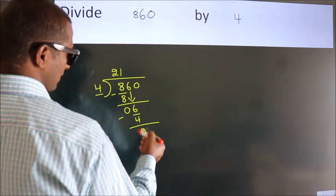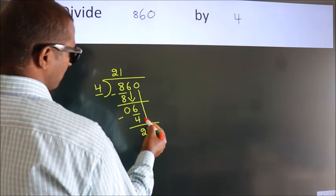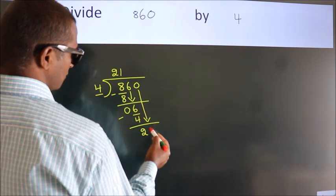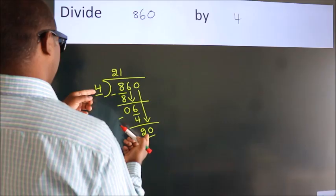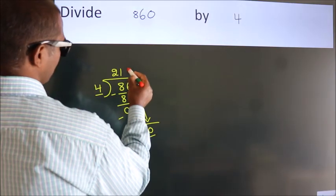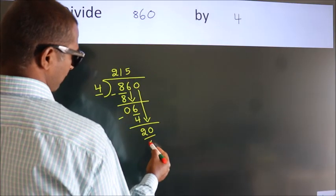After this, bring down the beside number, so bring 0 down. So 20. When do we get 20 in the 4 table? 4 times 5 is 20.